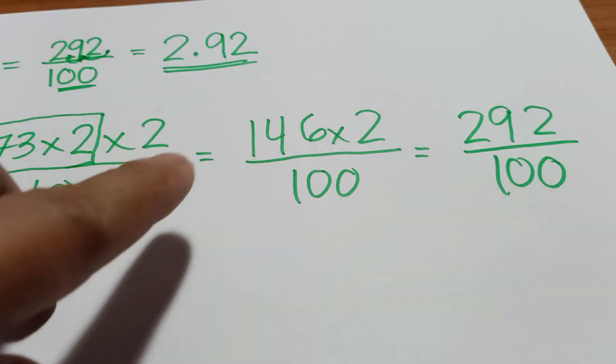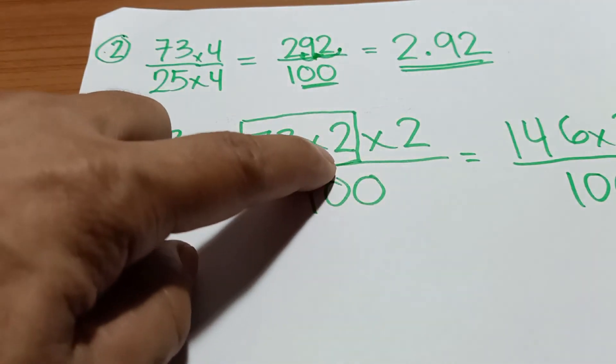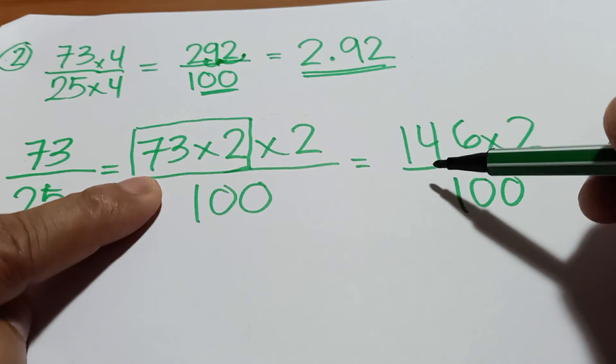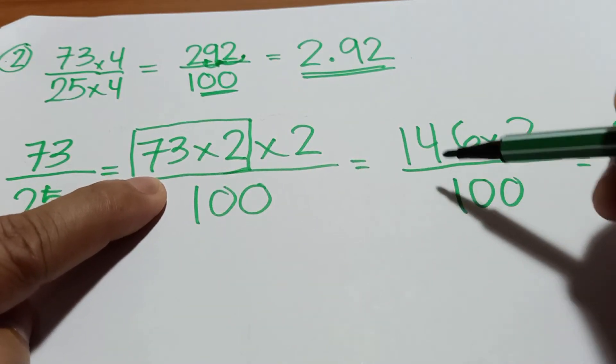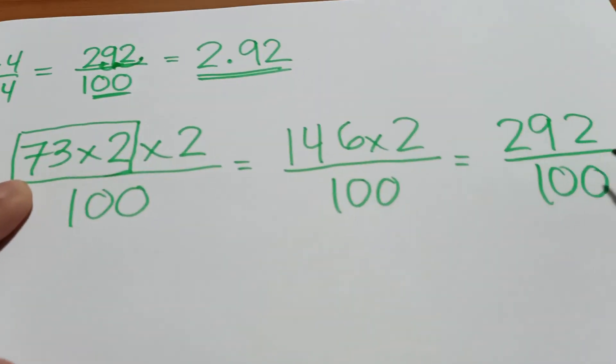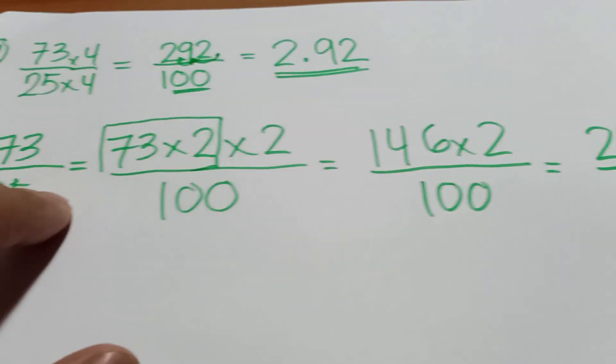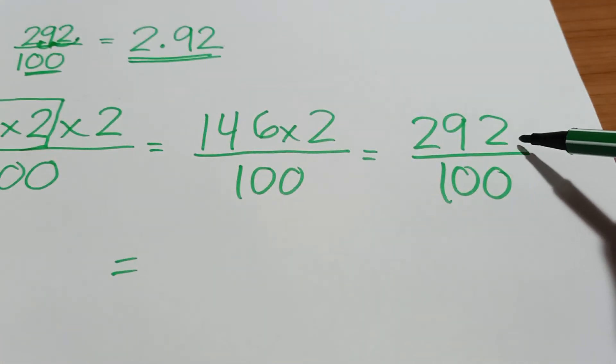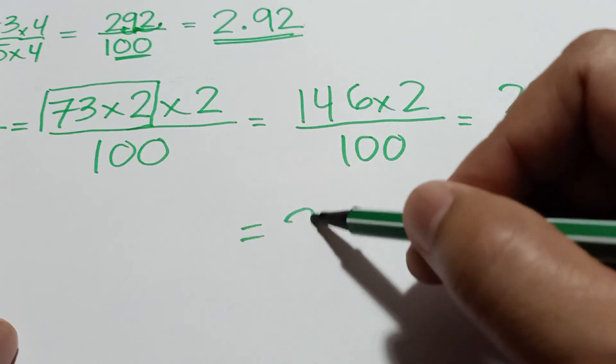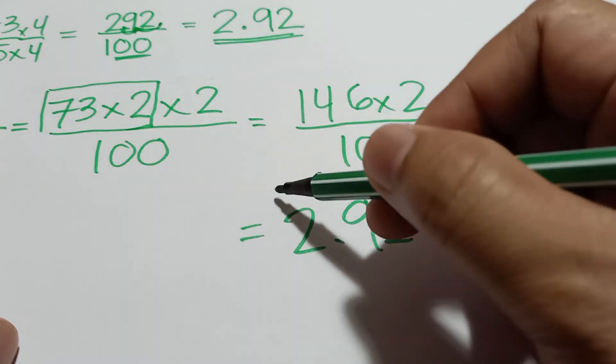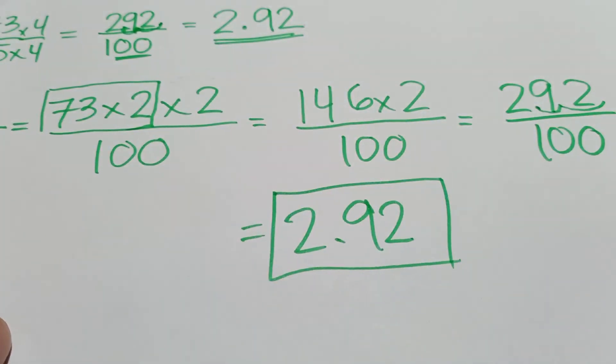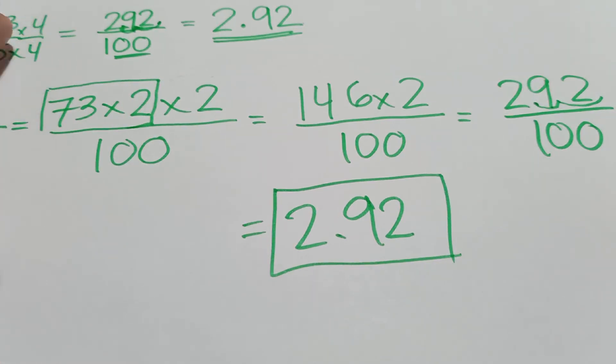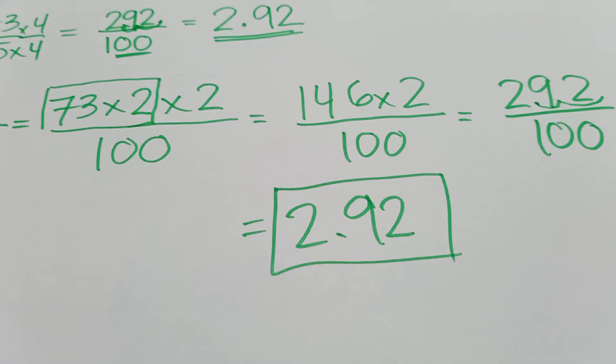So 146 - at first we multiply 73 times 2, and the answer is 146. Then we just multiply it by 2 again, and the answer is 292 over 100. And then to get the final answer, just move your point to the left twice, 1, 2. So the answer is 2.92. So that's the final answer. So you can choose whether you multiply by 2 twice or just directly multiply it by 4. Isn't it easy?